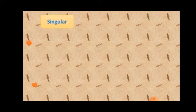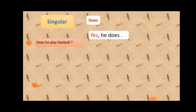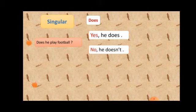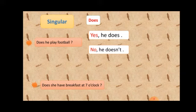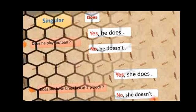Singular with does. For example: Does he play football? We said we answer question by do or does by what? Yes or no. Excellent Primary. Yes he does or no he doesn't. Another example: Does she have breakfast at 7 o'clock? How we answer? Yes or no. Yes she does or no she doesn't.